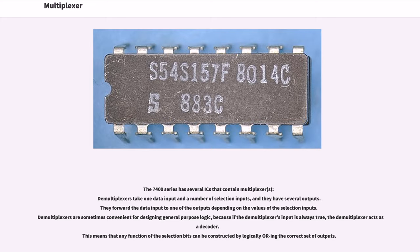Demultiplexers are sometimes convenient for designing general purpose logic, because if the demultiplexer's input is always true, the demultiplexer acts as a decoder. This means that any function of the selection bits can be constructed by logically ordering the correct set of outputs.